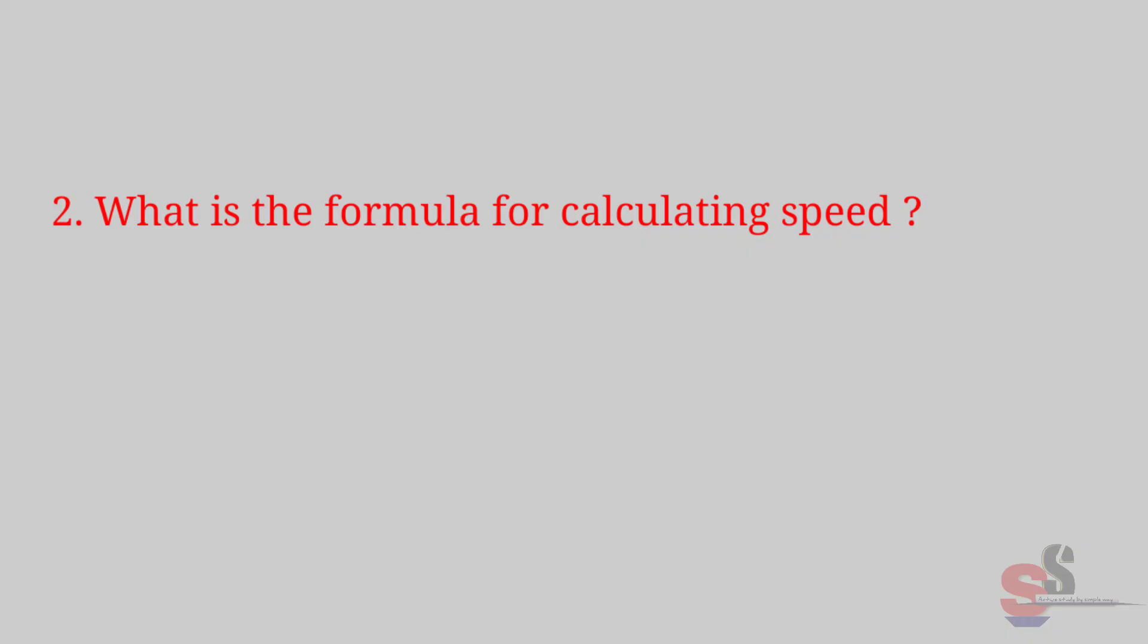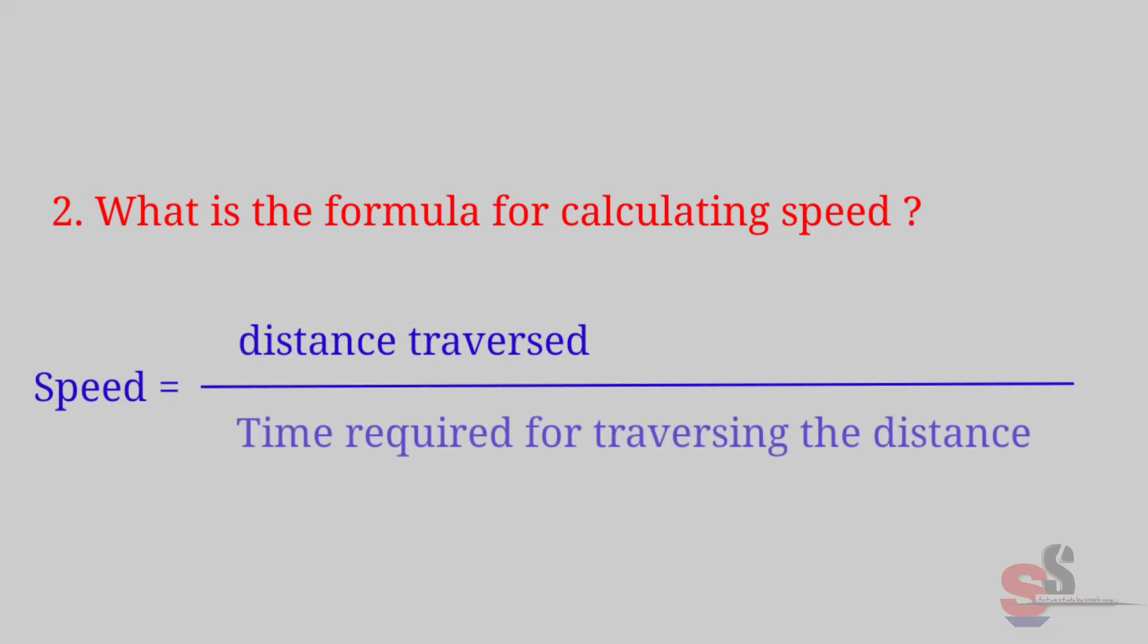Answer: The distance traversed by an object in unit time is called the speed of that object. Second, what is the formula for calculating speed? Answer: Speed is equal to distance traversed upon time required for traversing the distance.